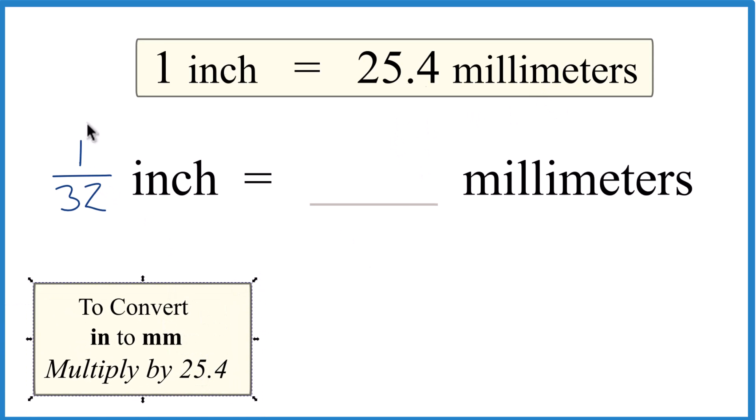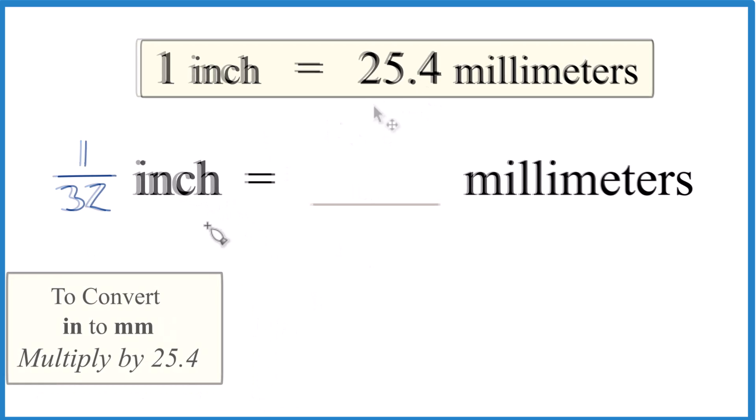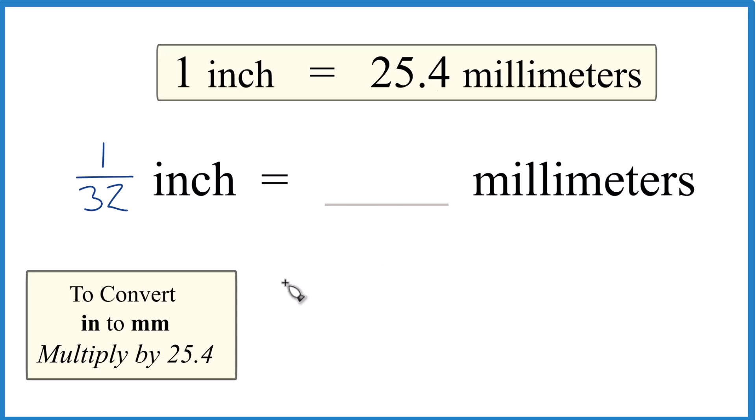So we just need to multiply our 1/32 inch by 25.4. So I divide 1 by 32 on my calculator, and that's inches. And I just multiply it by 25.4. That's millimeters. And that's how many millimeters we have in 1 inch per inch.